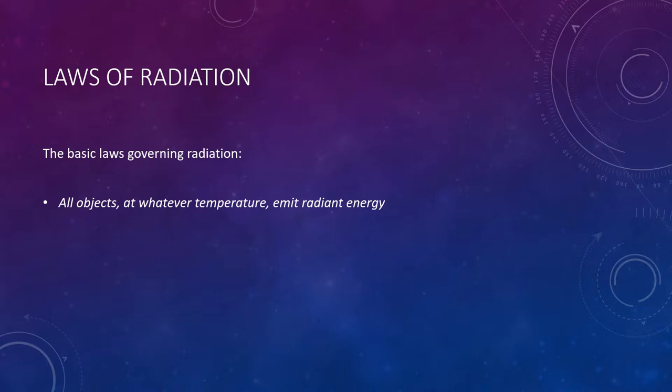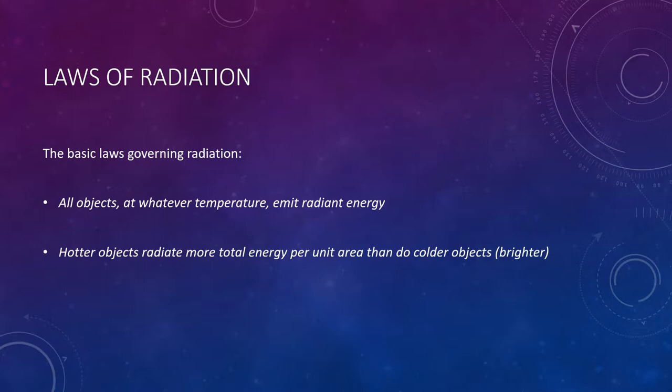Hotter objects radiate more total energy per unit area than do colder objects. The Sun, which has a surface temperature of nearly 10,000 degrees Fahrenheit, emits about 160,000 times more energy per unit area than does the Earth, which has an average temperature of about 59 degrees Fahrenheit.